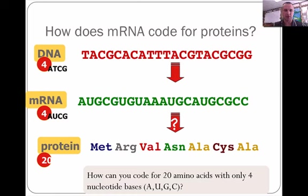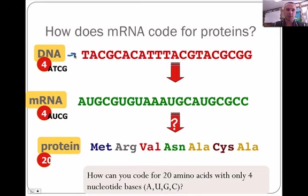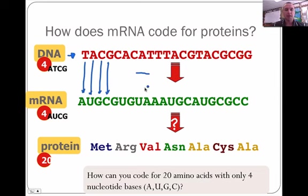mRNA has all these letters in it — AUG, C, GU, UACC, whatever — and it got that information from the DNA. Up here we have a DNA molecule, or one side of a DNA molecule. This T went with this A, AUGC, etc., all the way down the line, and that created mRNA. This mRNA then left the nucleus and went to the ribosome where it was coded.